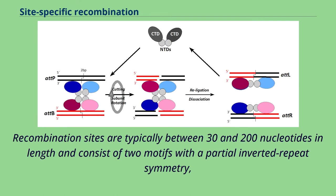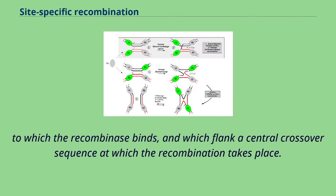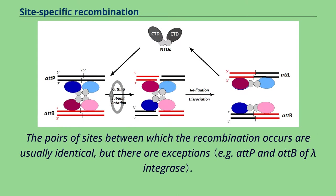Recombination sites are typically between 30 and 200 nucleotides in length and consist of two motifs with a partial inverted repeat symmetry, to which the recombinase binds, and which flank a central crossover sequence at which the recombination takes place. The pairs of sites between which the recombination occurs are usually identical, but there are exceptions.